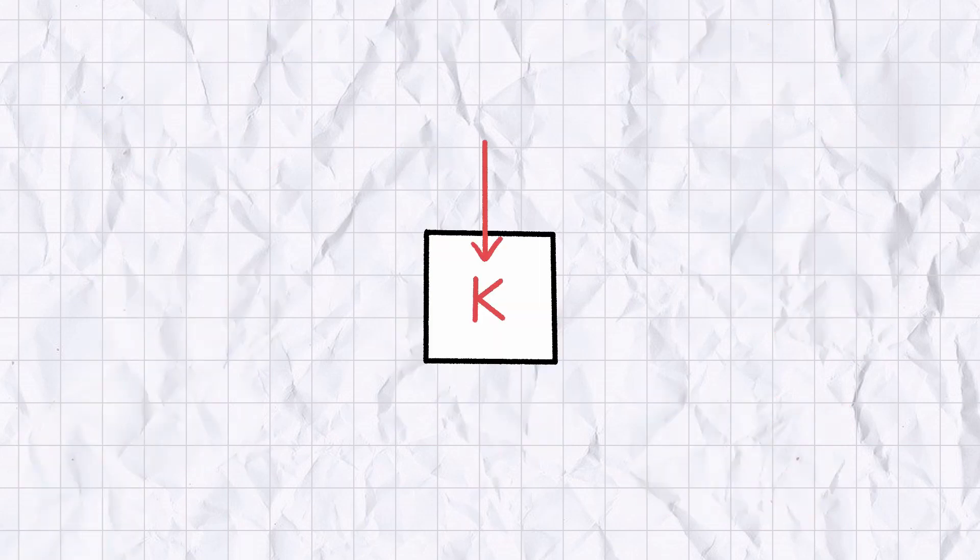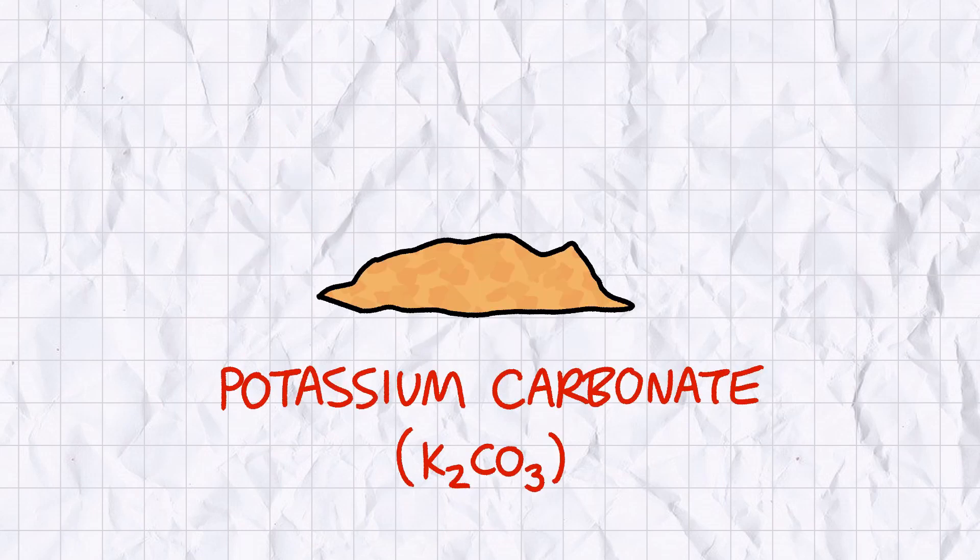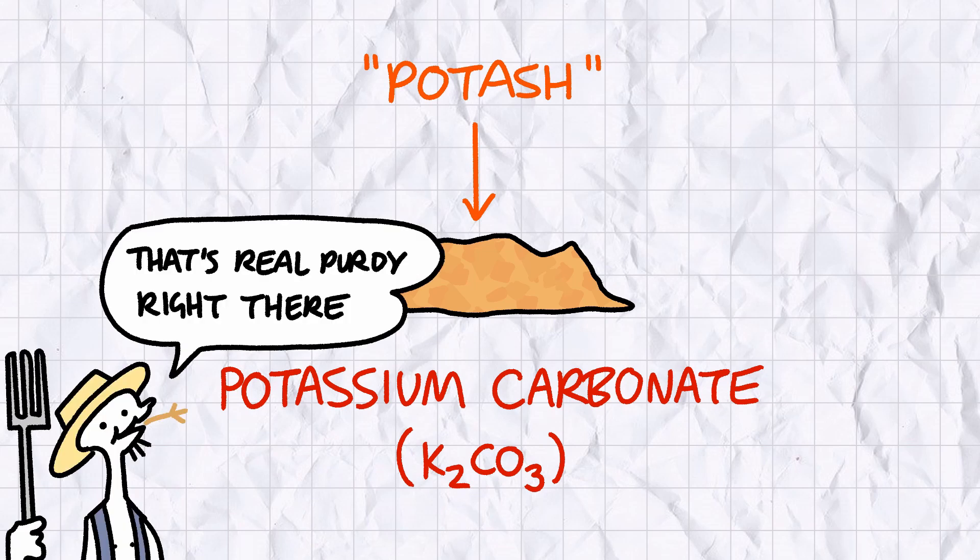Right, moving on. Potassium symbol K comes from its Latin name calium, which in turn is derived from an ancient Arabic term for plant ashes. This refers to potassium carbonate, more commonly known to farmers as potash, a crumbly potassium salt used in agriculture as a fertiliser.